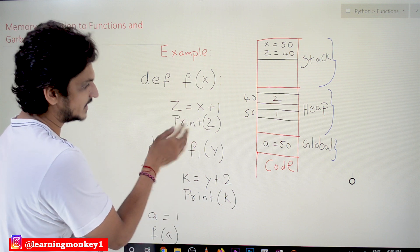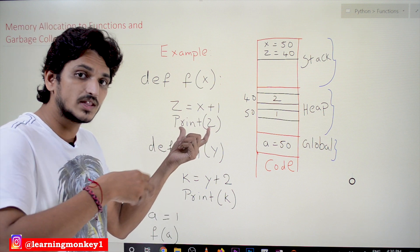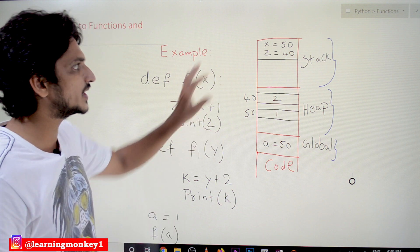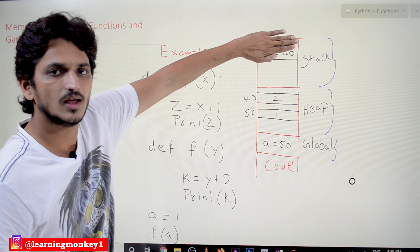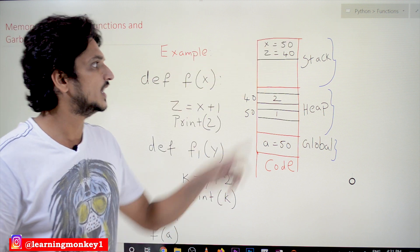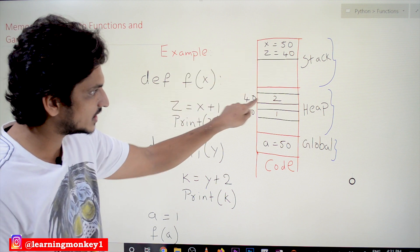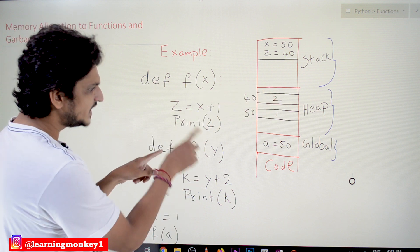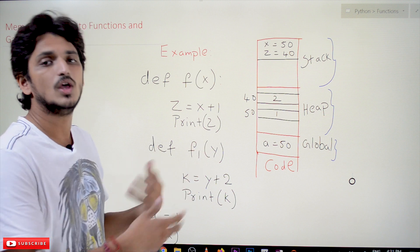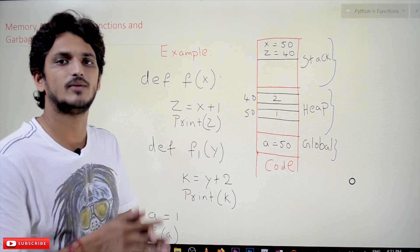When the next line print z executes, the function searches in the space allocated to it, finds z = 40, goes to the 40th memory location, gets the object, and displays it. The output 2 will be displayed. This is how the function space is assigned and the function retrieves its variables.